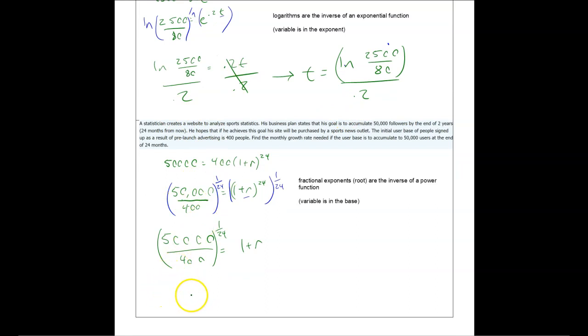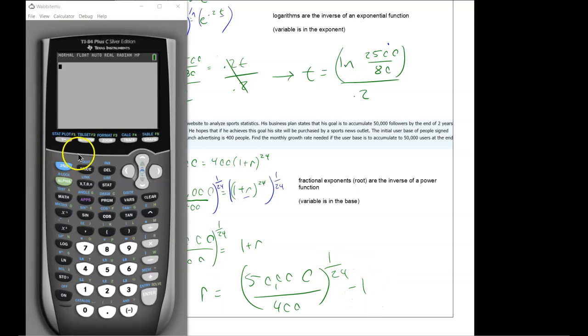Same thing here. I could write R is equal to this expression to the 1/24th power minus 1. The reason it's useful to me to leave it alone like that is then I can type in my expression all at once into the calculator.